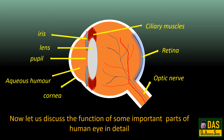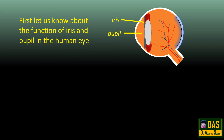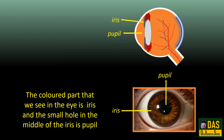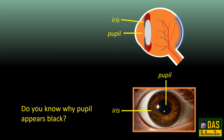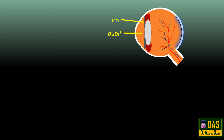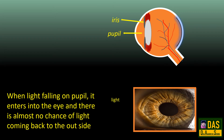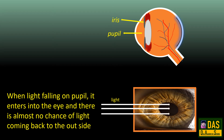Now let us discuss the function of some important parts of the human eye in detail. The colored part we see in the eye is the iris, and the small hole in the middle of the iris is the pupil. Do you know why the pupil appears black? When light falls on the pupil, it enters the eye and there is almost no chance of light coming back outside. Hence, the pupil appears black in color.